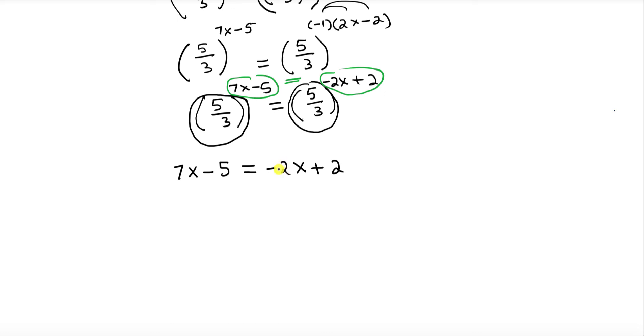Now isolate x by putting x on one side and the constant on the other side. Add 2x to both sides. This is gone - we got 9x minus 5 equals 2.